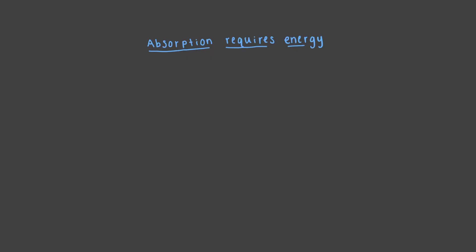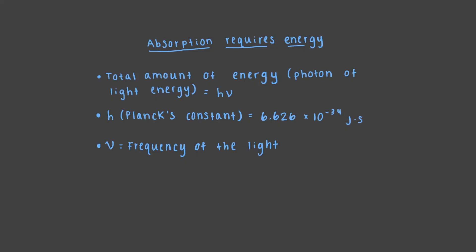This energy must be coming from the light. The total amount of energy transferred by the light to the electron during this process is called a photon of light energy, H nu, where H is Planck's constant, equal to 6.626 times 10 to the negative 34 joules times seconds, and nu is the frequency of the light. H nu is equal to E photon. This is the photon energy.